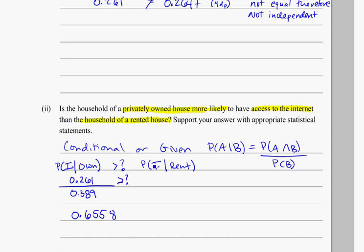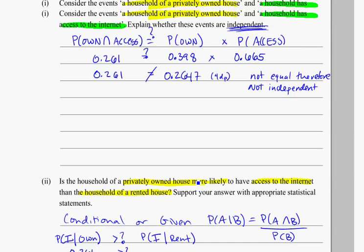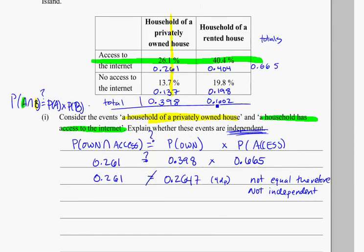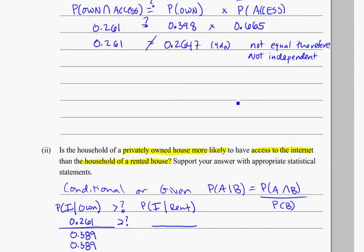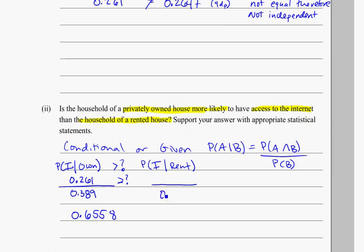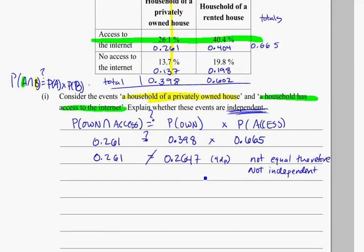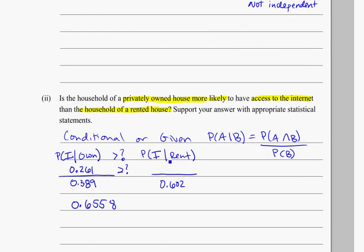We're checking, we don't know, to see how it compares to this side. The probability that somebody rents, that's the 0.602. And that they have internet, if they rent, or they have access to the internet, that's the 0.404. That is actually equal to 0.6711.